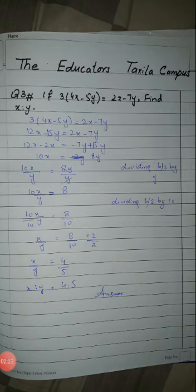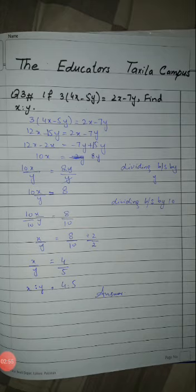Since we want to find x ratio y, we divide both sides by y. This gives 10x divided by y = 8, then dividing both sides by 10 gives x/y = 8/10. Reducing to lowest form by dividing by 2 gives 4/5, so x:y = 4:5. Thank you.